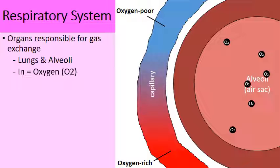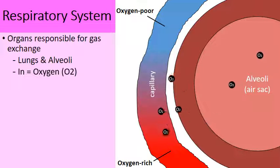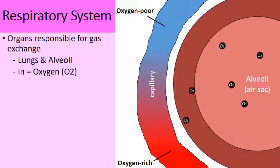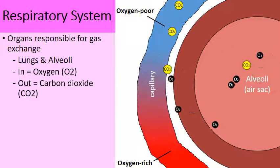Here's a zoomed-in diagram of one of those air sacs — an alveolus. Notice it has a tiny capillary just on the outside of it. What happens is oxygen will diffuse into the capillary, into the bloodstream. While that's happening, carbon dioxide diffuses out.